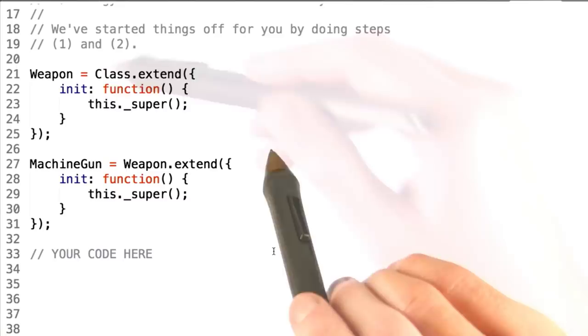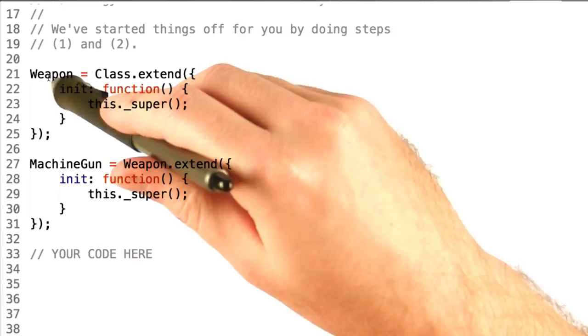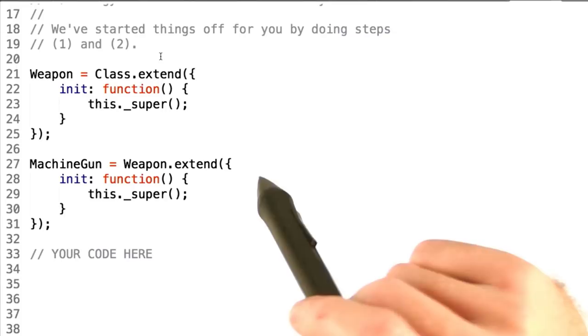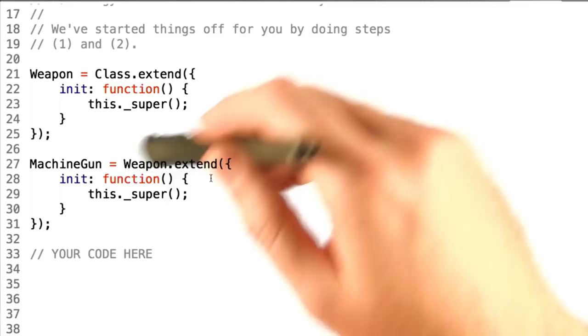Now we've started this off for you, but we're going to have you complete this yourself. First, we set weapon to be class.extend. What this means is that weapon extends all of class's functionality, whatever that happens to be, and then adds its own on top of it.